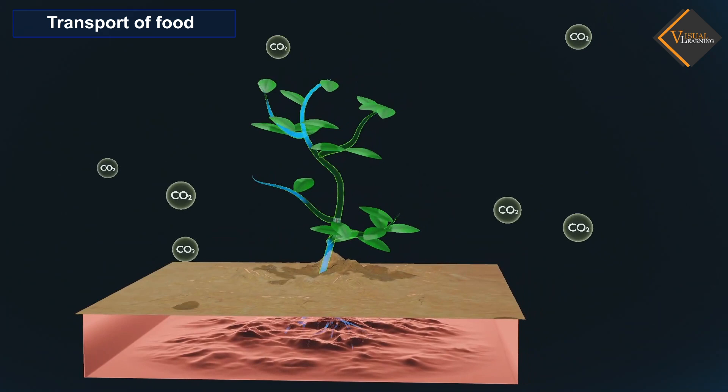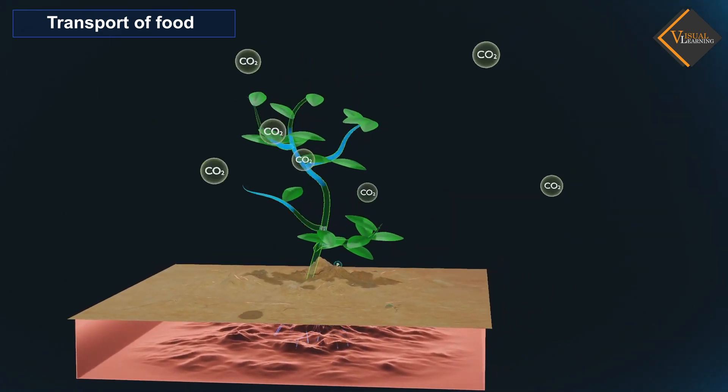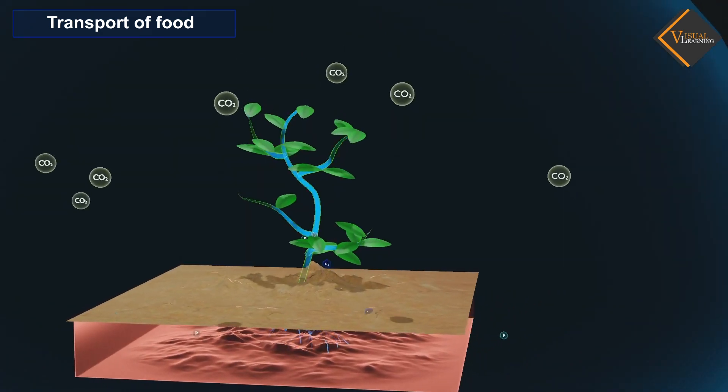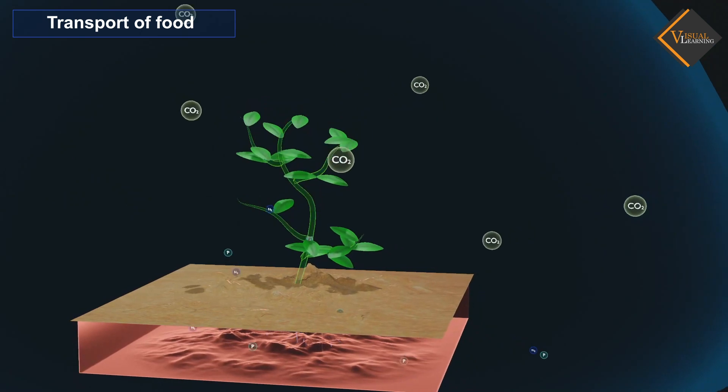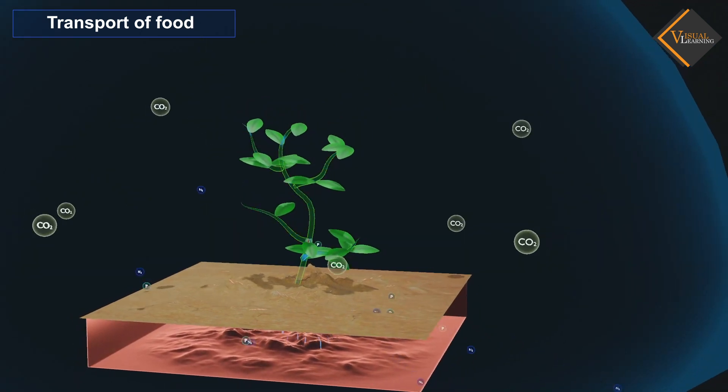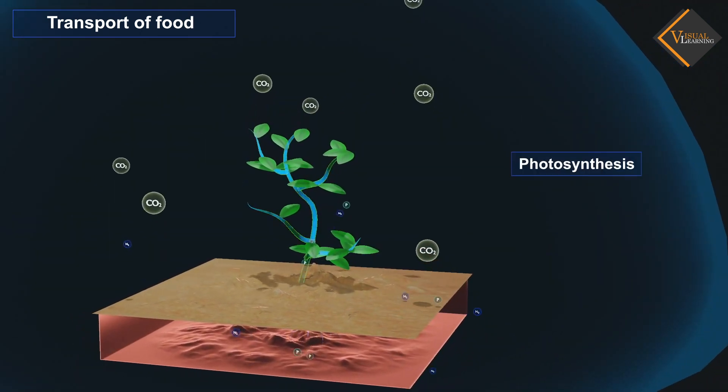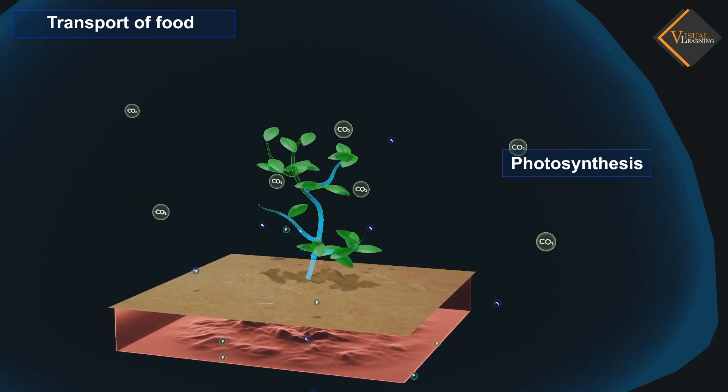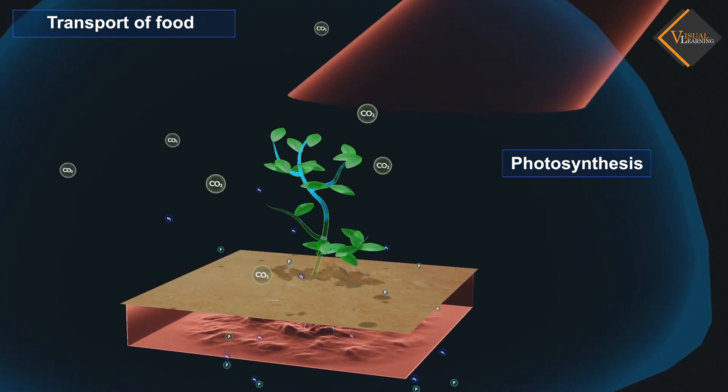So far we have discussed the transport of water and minerals in plants. Now let us consider how the products of metabolic processes, particularly photosynthesis, are moved from leaves where they are formed to other parts of the plant.